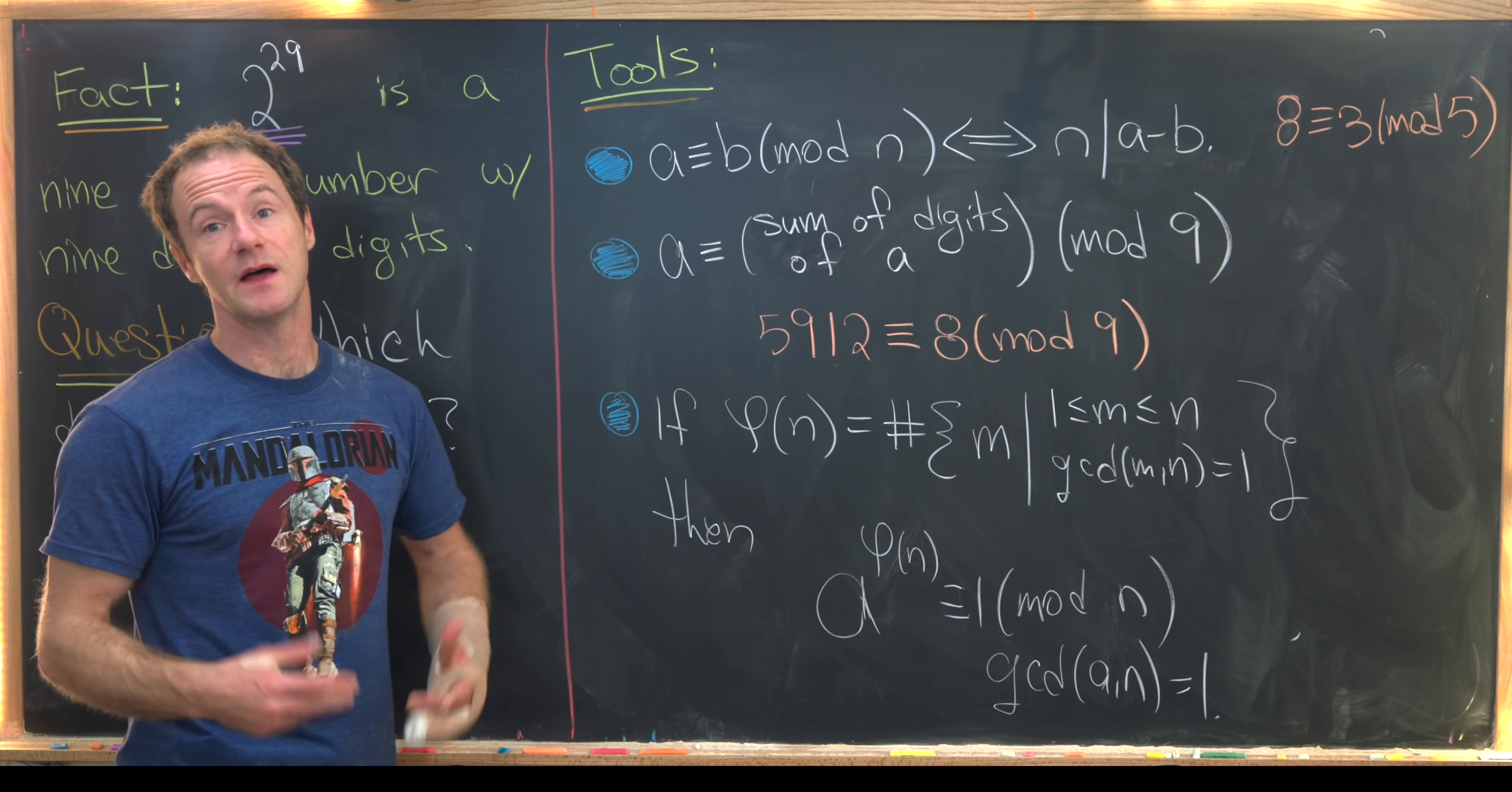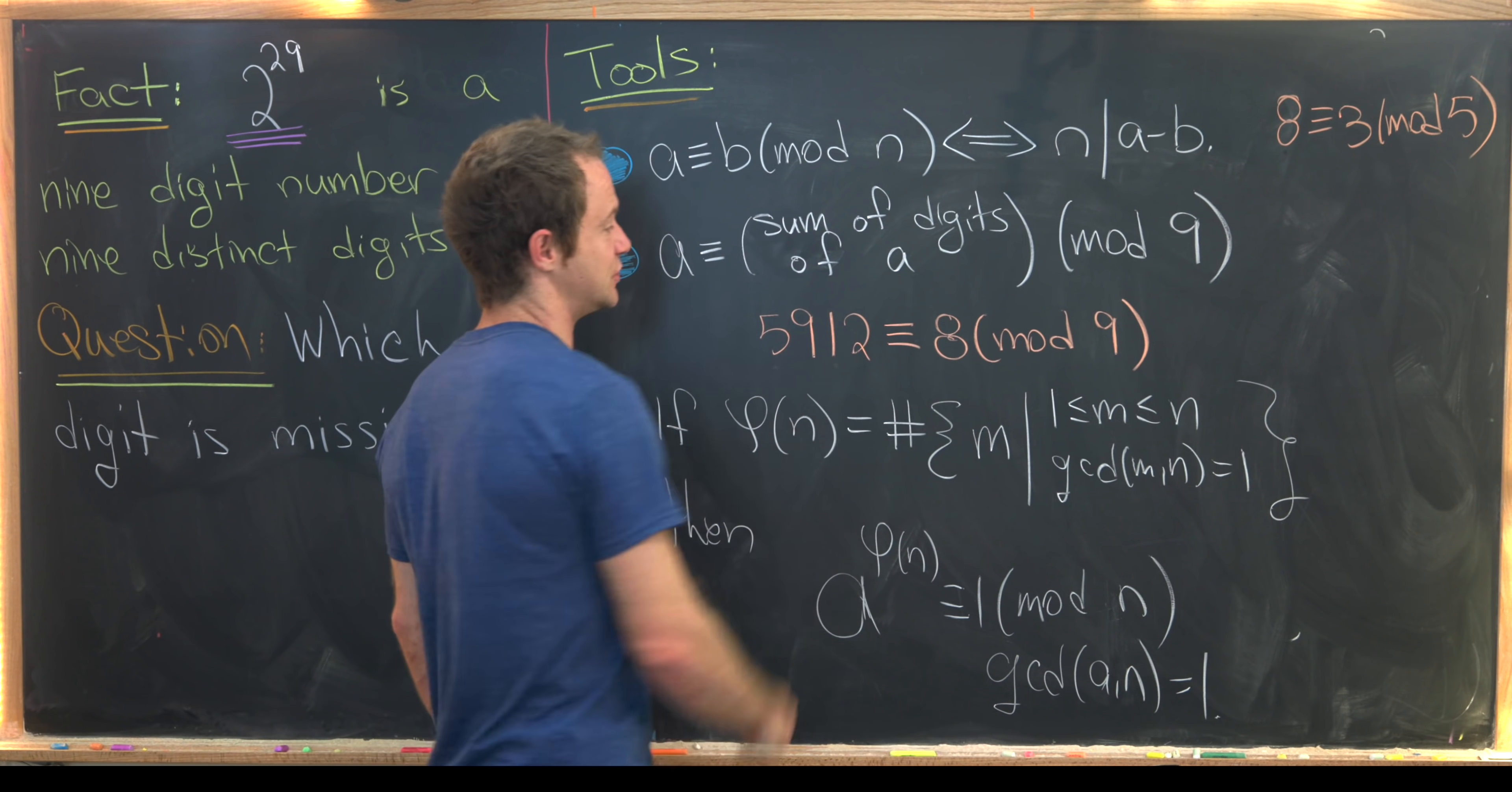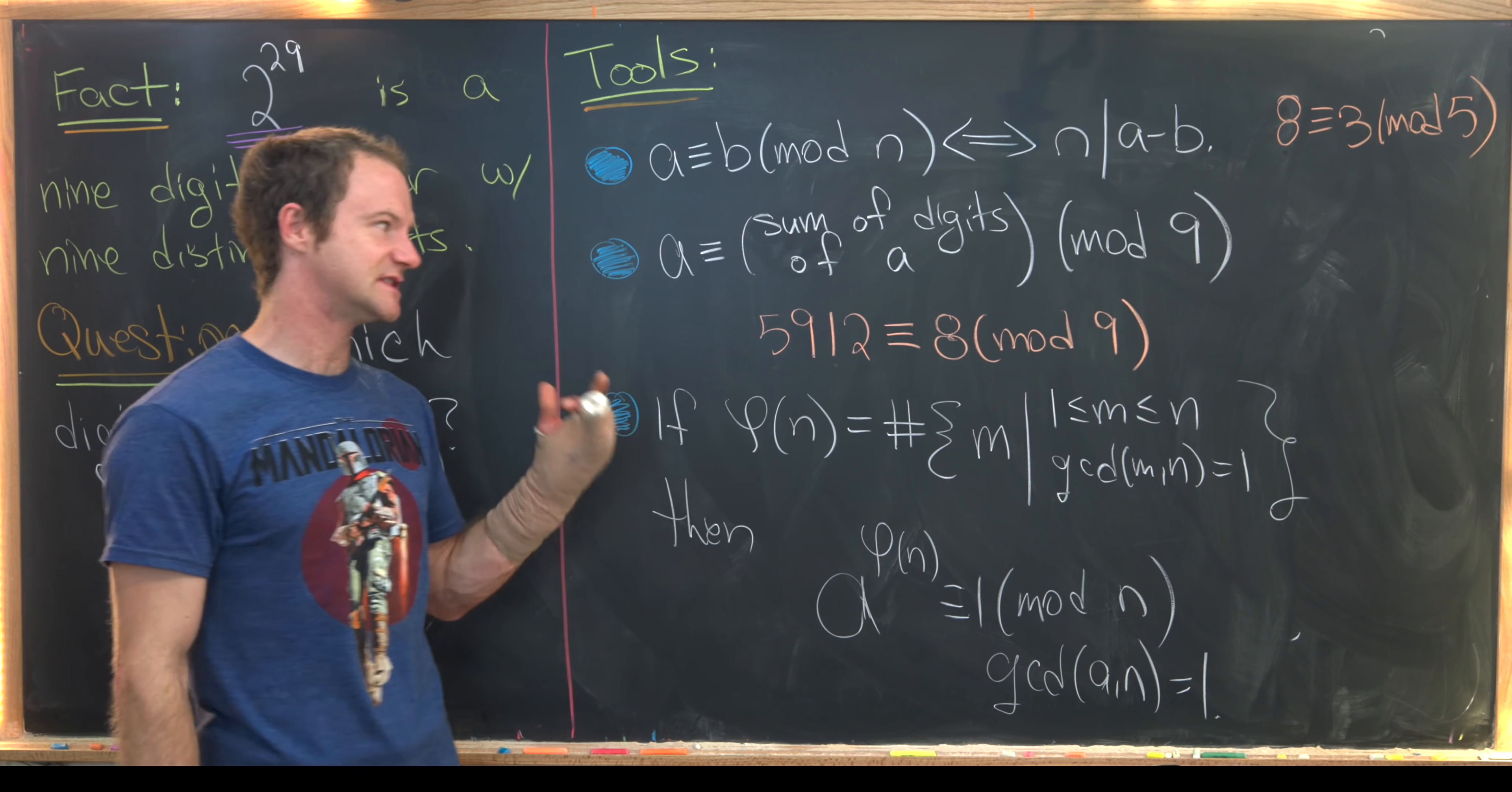But instead of looking at the divisibility, we can look at the congruence mod nine, and that's actually a little bit more general. So for example, 5912 is congruent to eight mod nine. That's because five plus nine plus one plus two is congruent to eight mod nine. It's actually equal to 17, right, and 17 has a remainder of eight when dividing by nine.